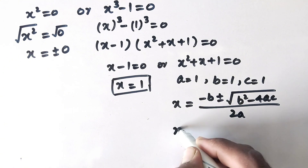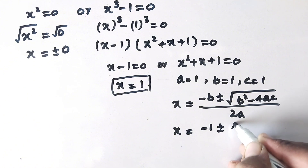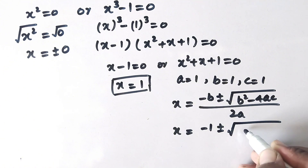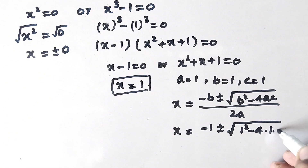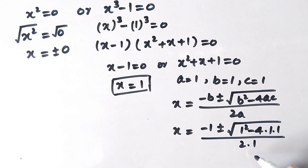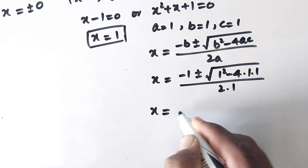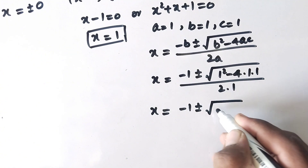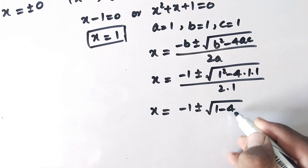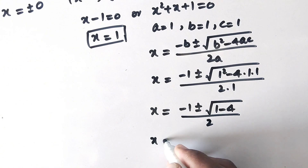Now by putting the values of a, b, and c, x is equal to minus 1 plus or minus square root of 1 squared minus 4 times 1 times 1 divided by 2 times 1. So x is equal to minus 1 plus or minus square root of 1 minus 4 divided by 2.